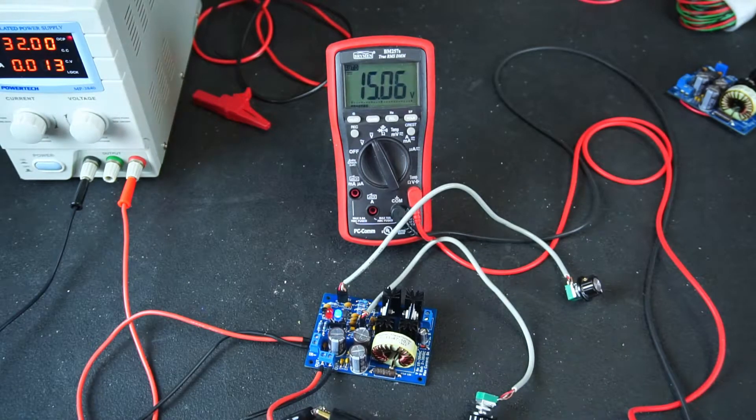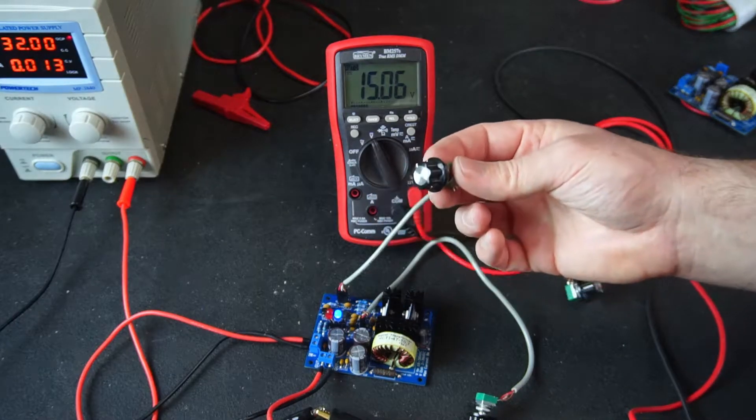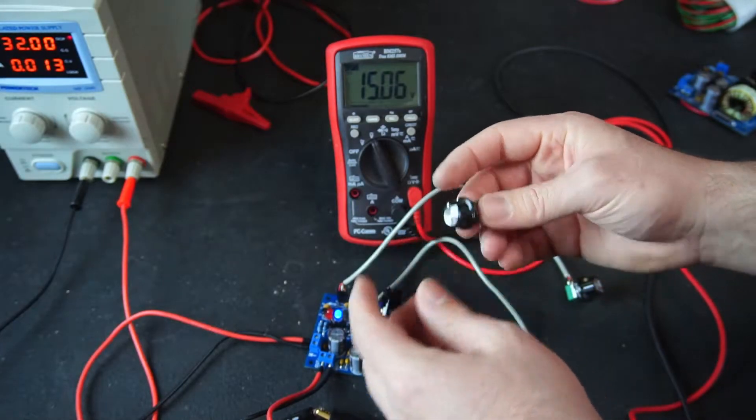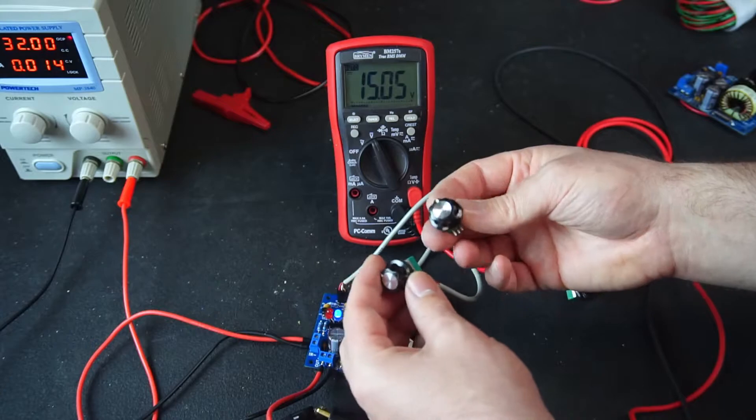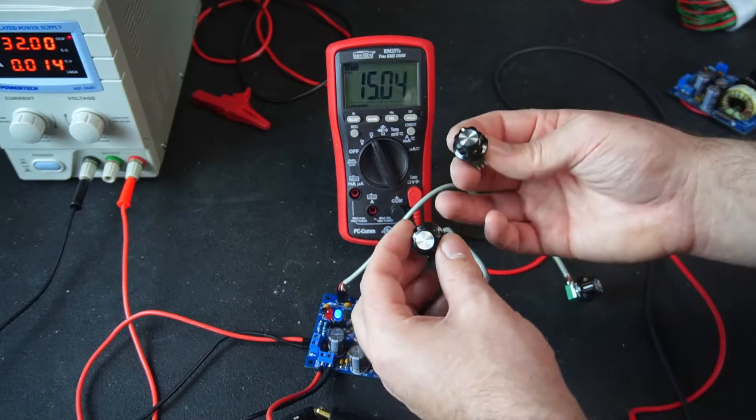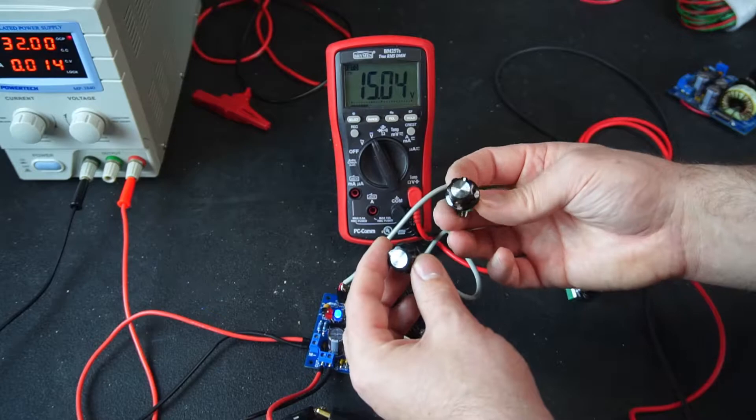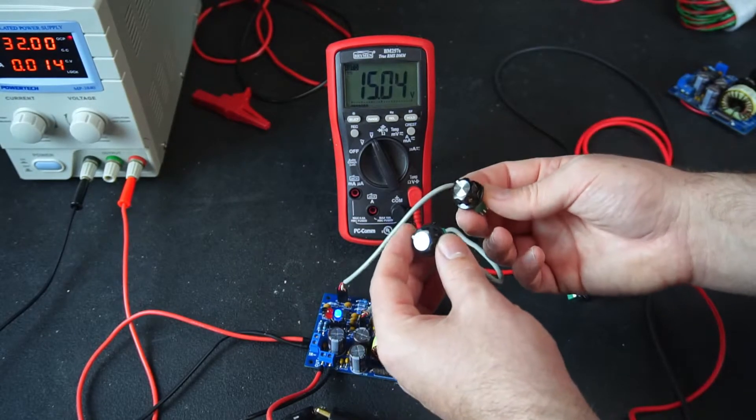So I've got the idea of adding a separate potentiometer side by side so you'd have quad potentiometers on the front of your enclosure and you're going to have a fine and a coarse adjustment for current and voltage.